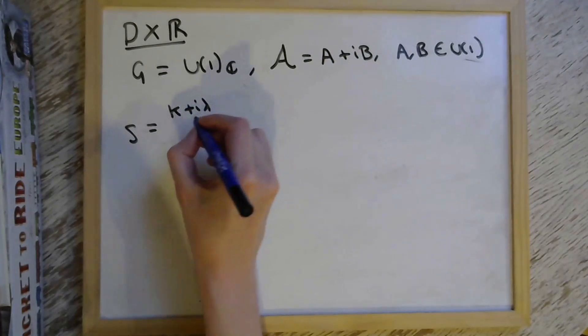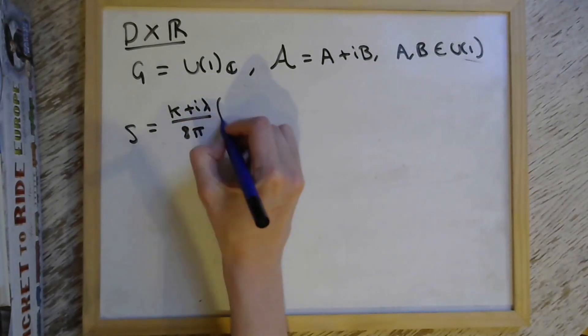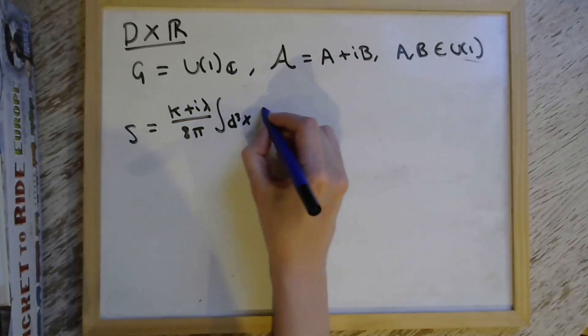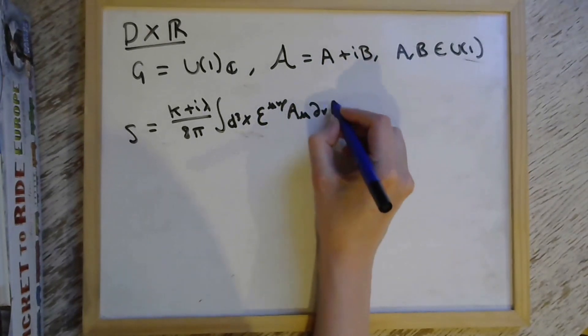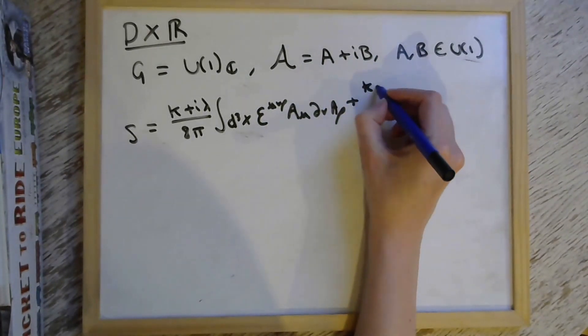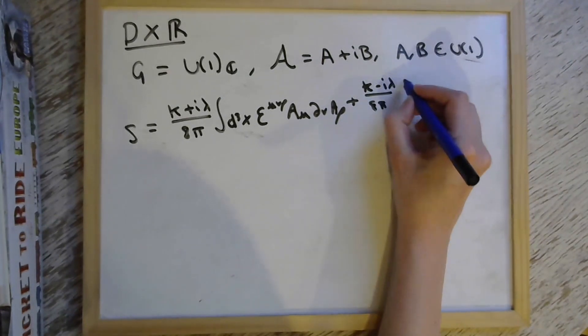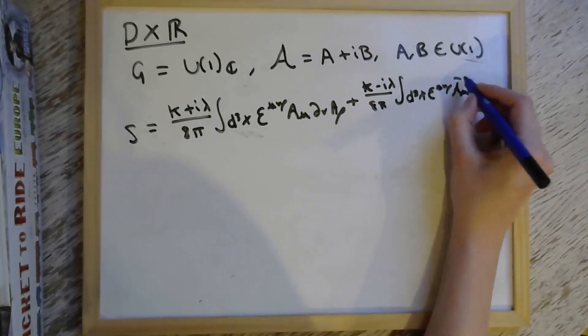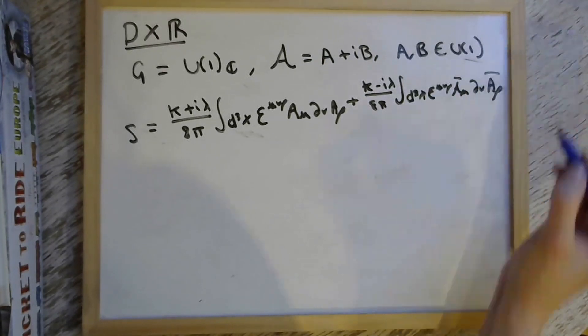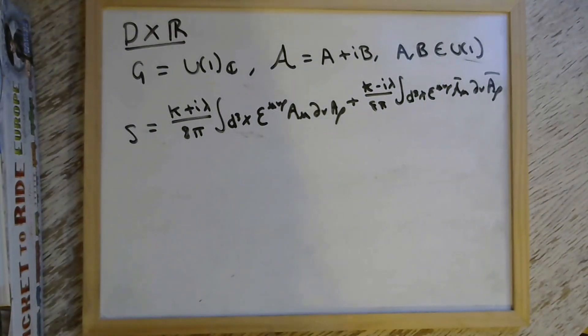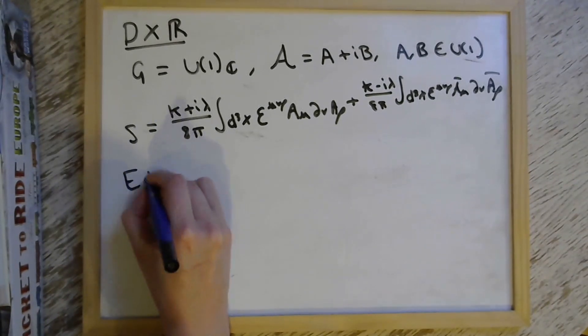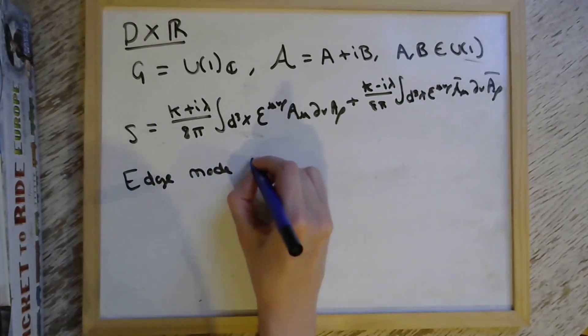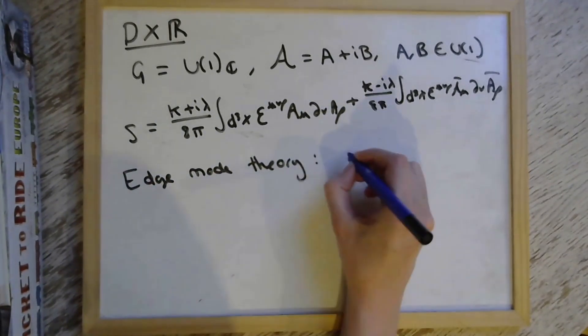The action then takes this form where we have a generally complex coupling constant, which isn't strictly necessary for the 3D gravity case, but it keeps everything as general as possible, which is nice. This A that I'm writing is the curly A that lives in the complexified U(1). I just didn't write it very well. And we lose the A∧A∧A term because this theory is abelian. So when we go through the process, we find that the edge mode theory that lives on the boundary of the disk is a conformal quantum mechanics problem.